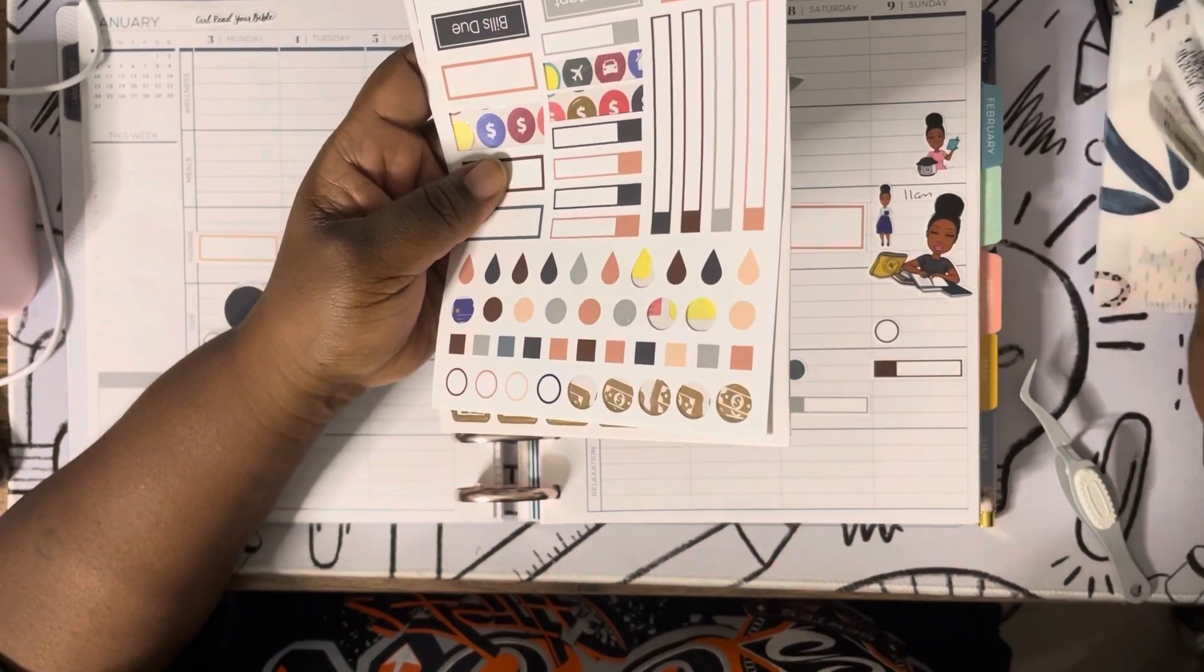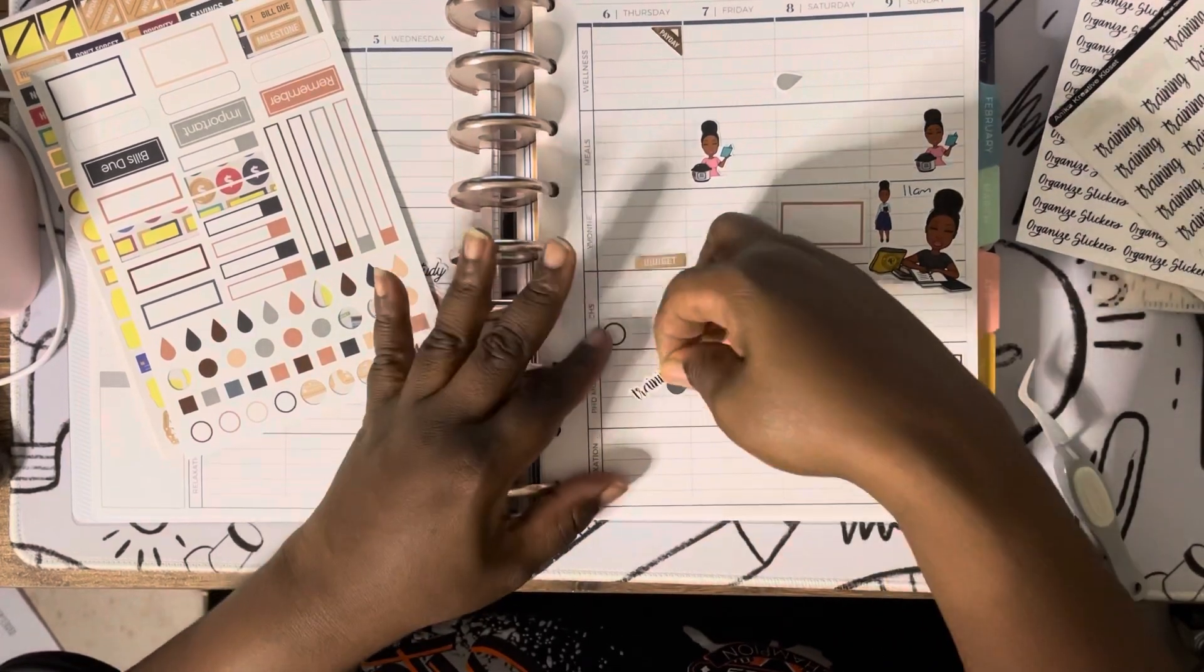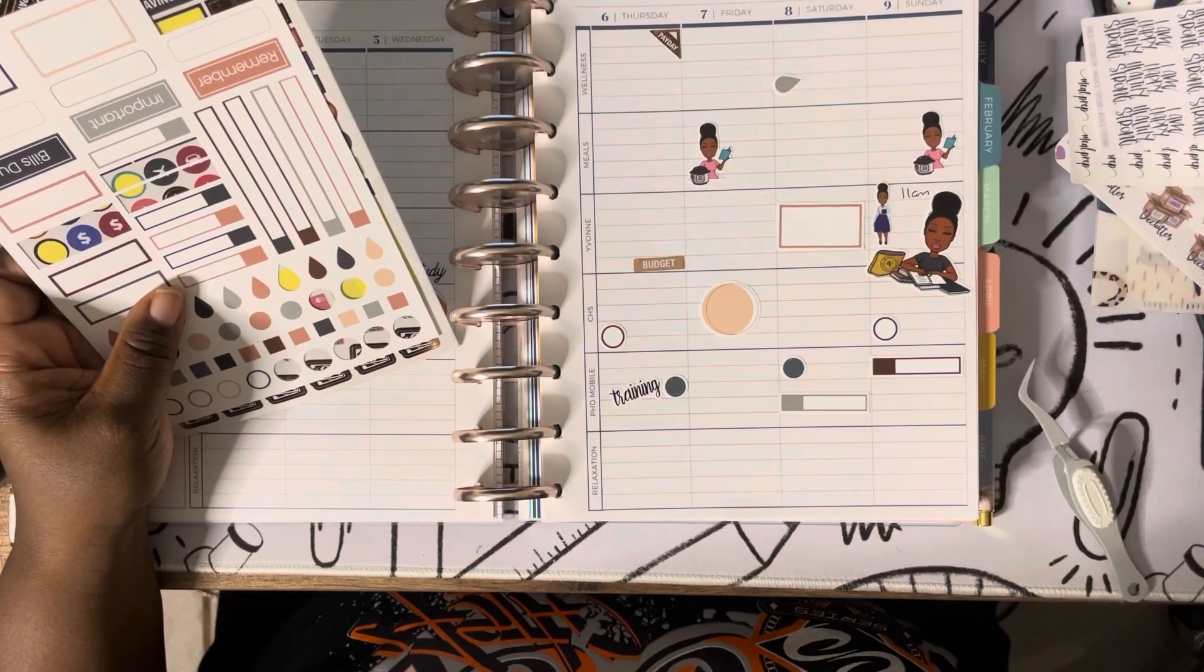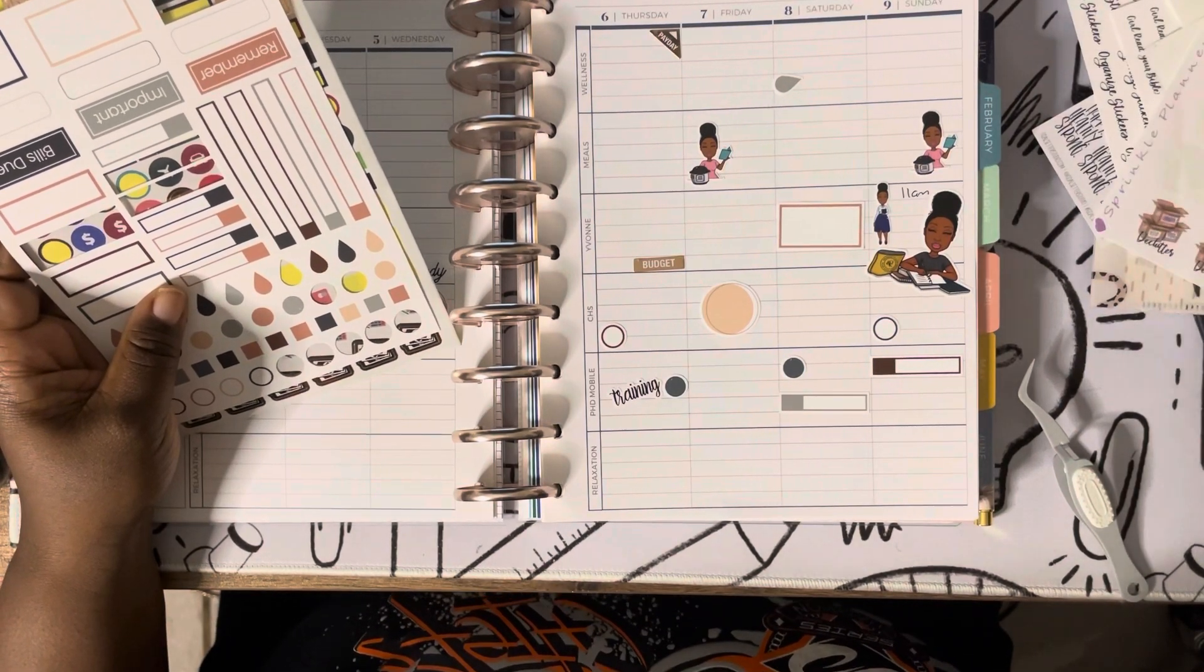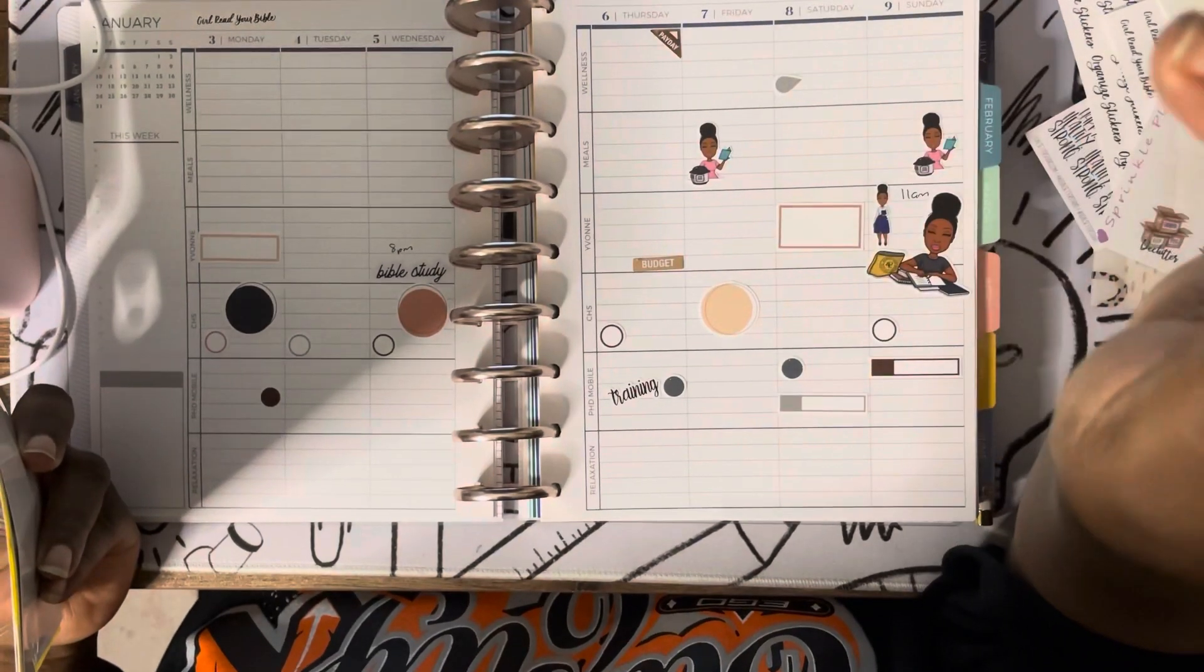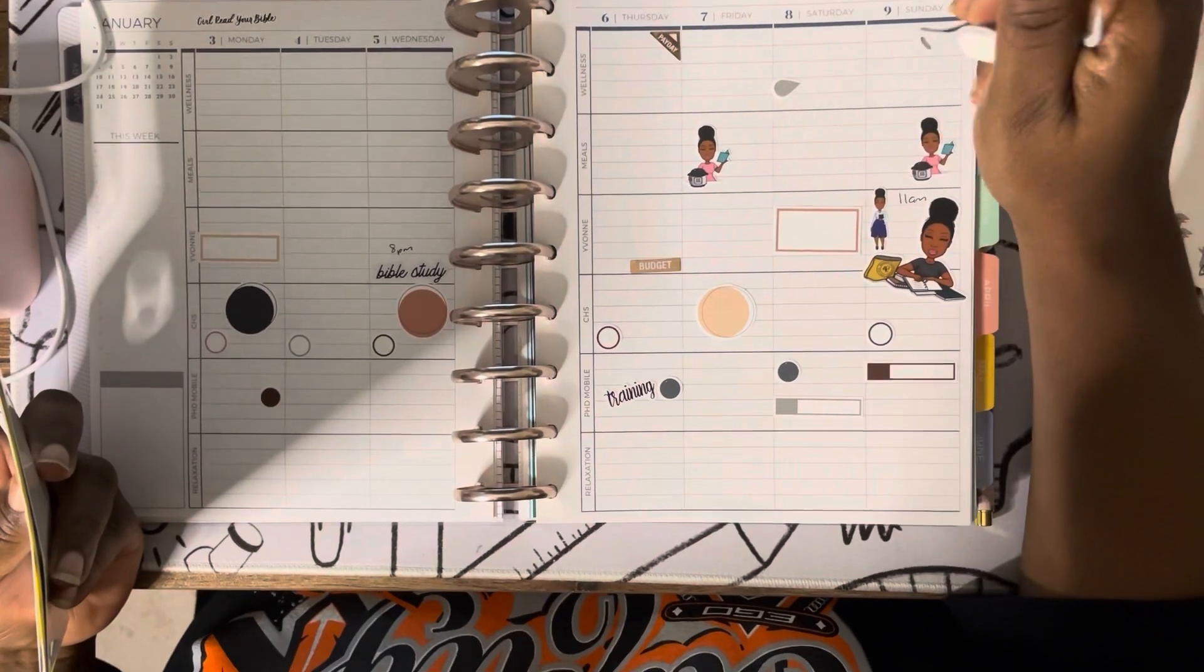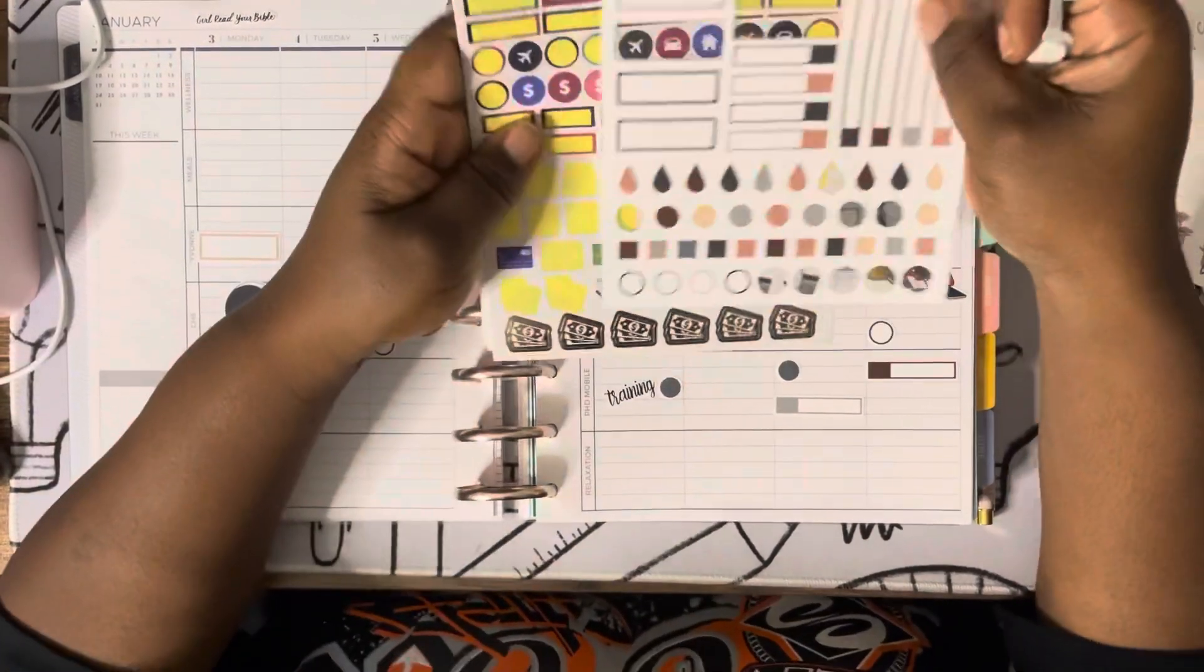I got this training sticker, let me put this training sticker down on Thursday. And I got to put my cleaning. So make sure I got everything. So I got my overtime days down, I got my Bible. Oh Bible reading, that's every day. So I'm not going to put that down because that's every day. I got the girl read your Bible up there, that's fine. Exercise I'm going to do on Monday, Wednesday, and Saturday. So I'll use these.